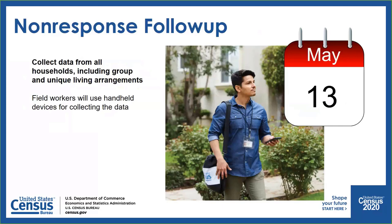Despite all of our best efforts, we know that not everybody will respond to the census on their own. But we still need to count those people. To do this, we have an operation that we call non-response follow-up. Beginning in May, we will send census takers into neighborhoods to follow up with those households who have not yet responded and assist them in responding. This is the largest non-military mobilization of the population that this country conducts — and also, I'm sure you can imagine, the most expensive component of the census. If we cannot secure an interview with someone in the non-responding household, we will attempt to get a proxy response from a neighbor or apartment manager — basically someone who can give us information about the household. We are very serious in our mission to include everyone in this once-a-decade count.